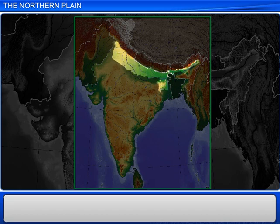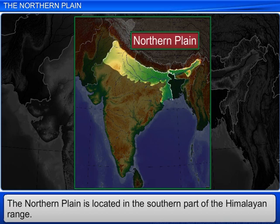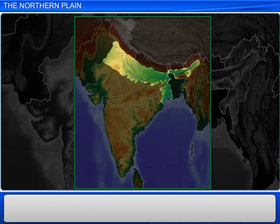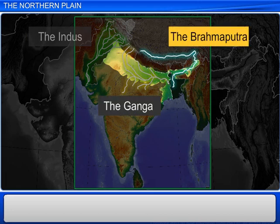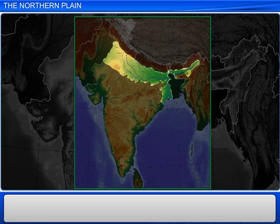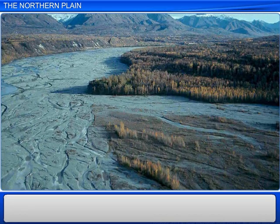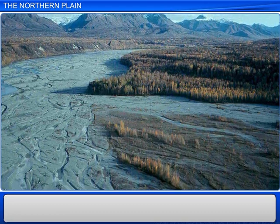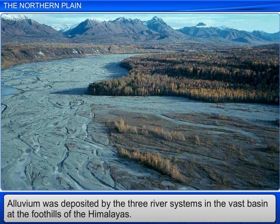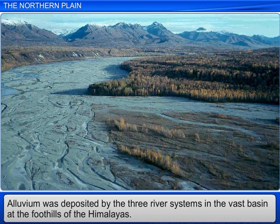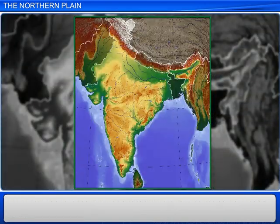The northern plain is located in the southern part of the Himalayan range. The plain is formed from the flood plains of three big river systems: the Indus, the Ganga, and the Brahmaputra. Based on the names of these river systems, the northern plain is also called the Indo-Gangetic Plain. The alluvium from these river systems was deposited in the vast basin at the foothills of the Himalayas, and over millions of years, these deposits built up to form the present-day fertile northern plain.